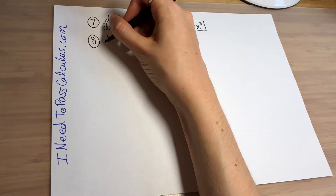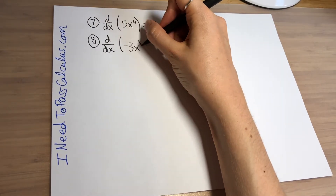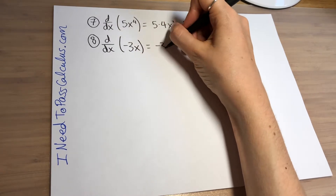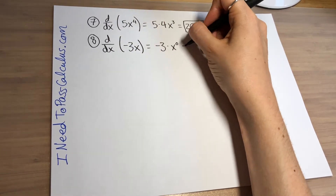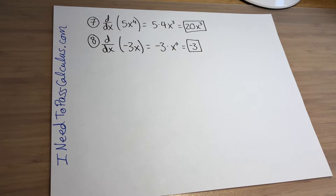For problem 8, let's take the derivative of another linear function: negative 3x. There are two ways to think about it. You can remember that for any linear function, only the number out front survives because it is the slope. Or algebraically, x to the 1 brings down the 1 to multiply with the negative 3 — which doesn't change it — and subtracting 1 from the exponent gives x to the 0, so your final answer is negative 3.